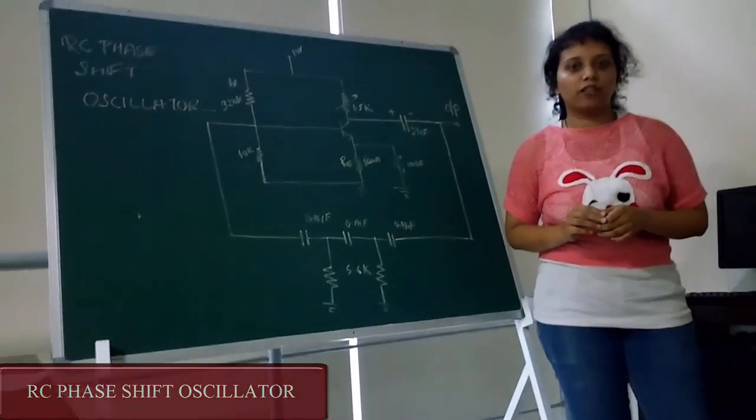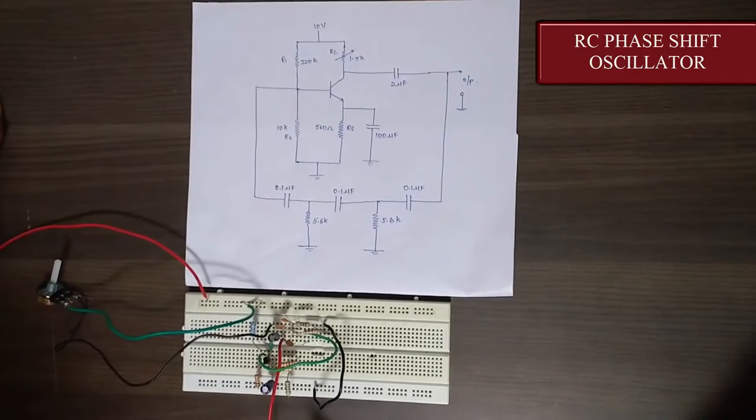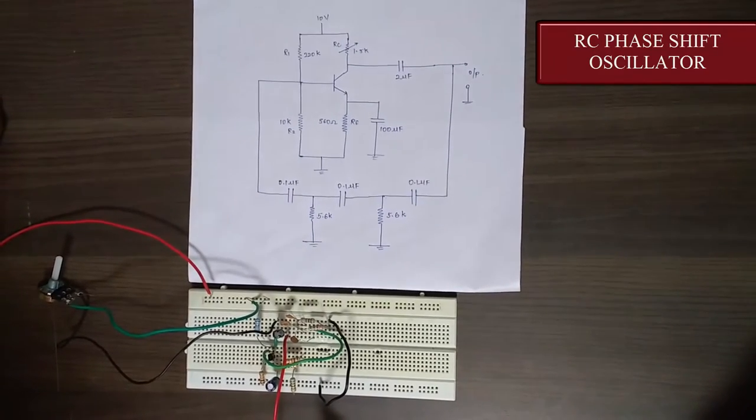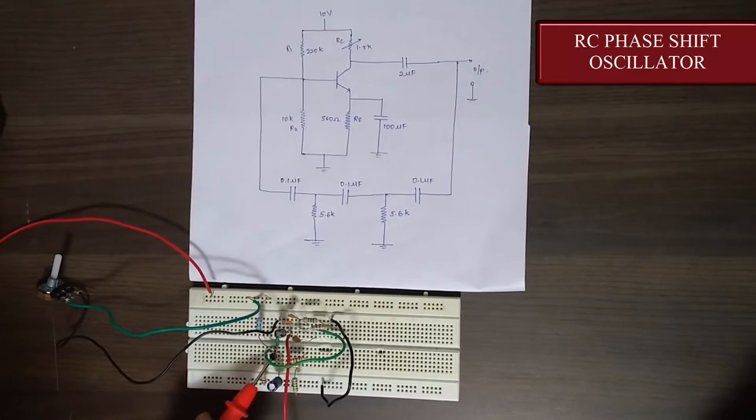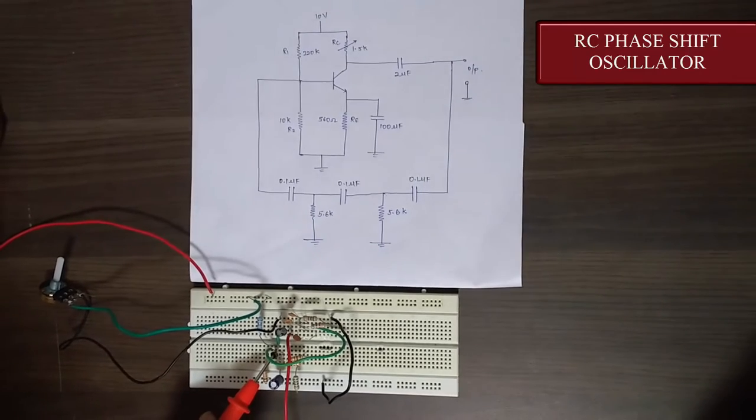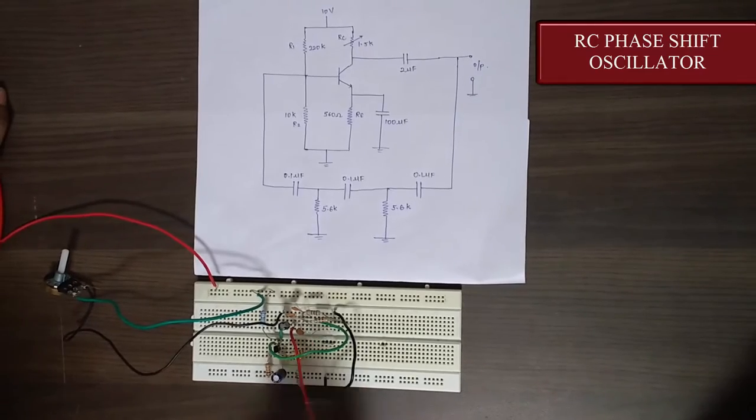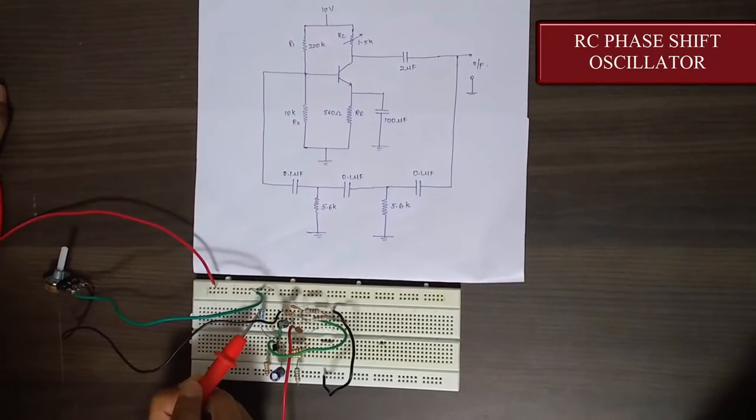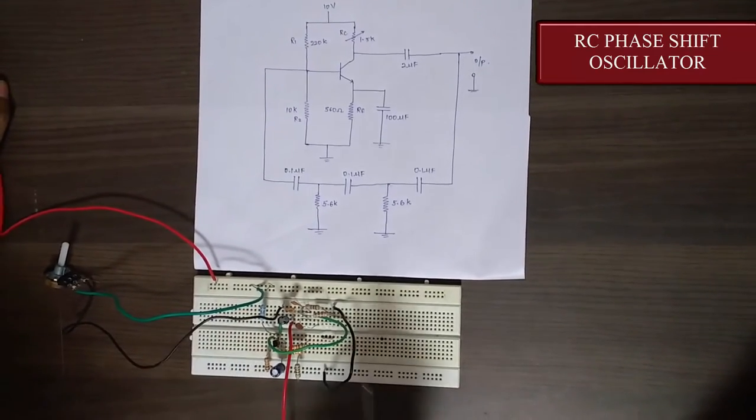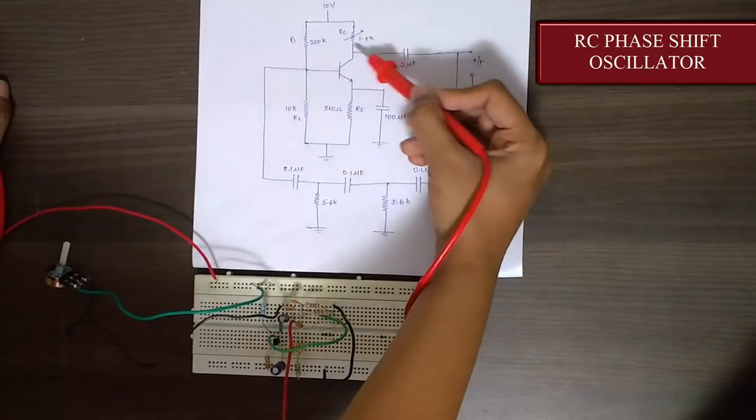Now let's see its breadboard implementation. This is the breadboard implementation of RC phase shift oscillator. Here as you can see this is BC 547 which is common emitter biased. Here this 10k resistor is R2 and this 220k resistor is R1.